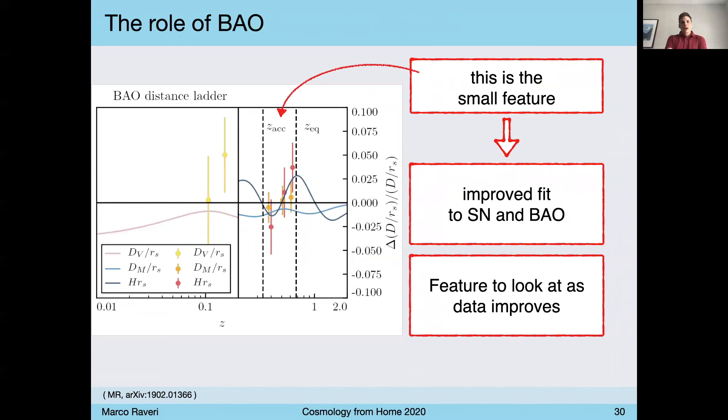We can look at this feature in the BAOs, and it's fairly surprising to see that it's coherent between supernovae and BAO, and in fact the best fit solutions slightly improves the fit to both data sets. And this is an example in which the reconstruction of dark energy models is telling us what are interesting features in the data to look out for.